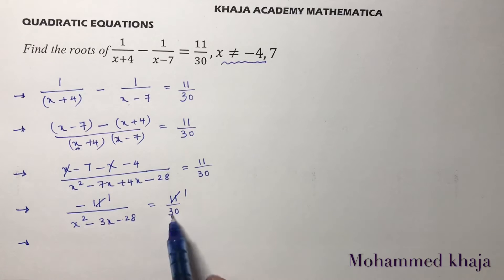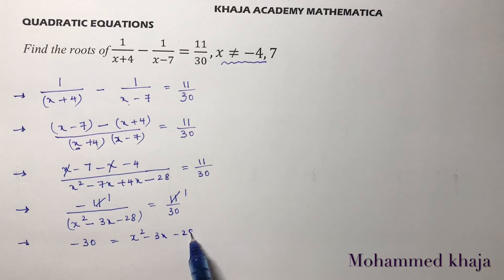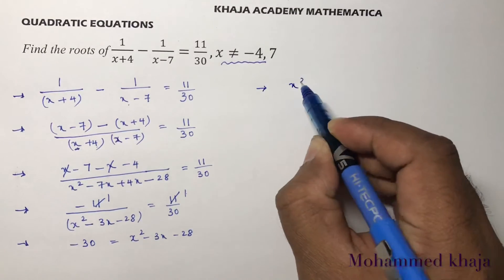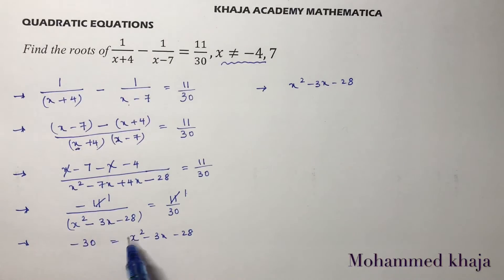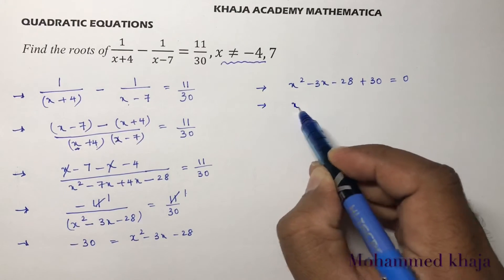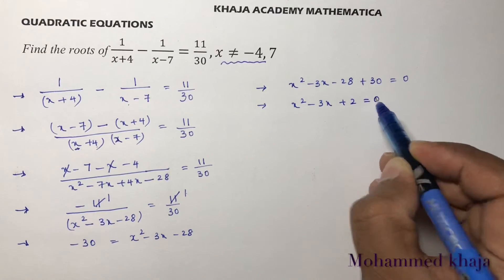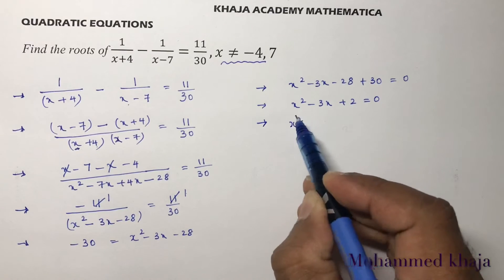Cross-multiplying: 30 times minus 11 equals 11 times (x squared minus 3x minus 28), which simplifies to minus 330 equals 11(x squared minus 3x minus 28). Dividing both sides by 11 gives minus 30 equals x squared minus 3x minus 28. Transposing minus 30, we get x squared minus 3x minus 28 plus 30 equals 0, which simplifies to x squared minus 3x plus 2 equals 0.